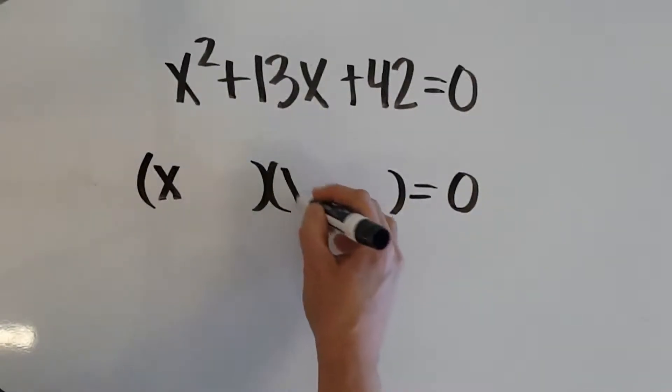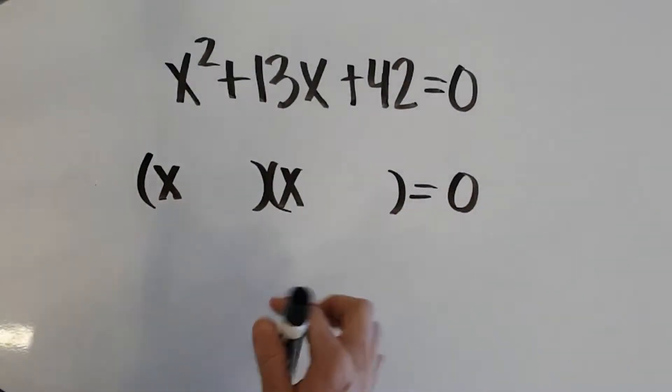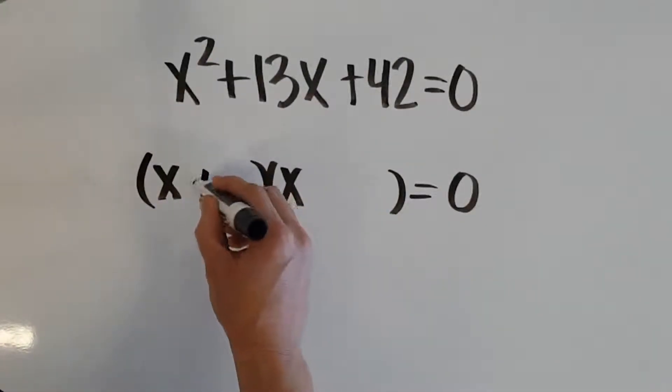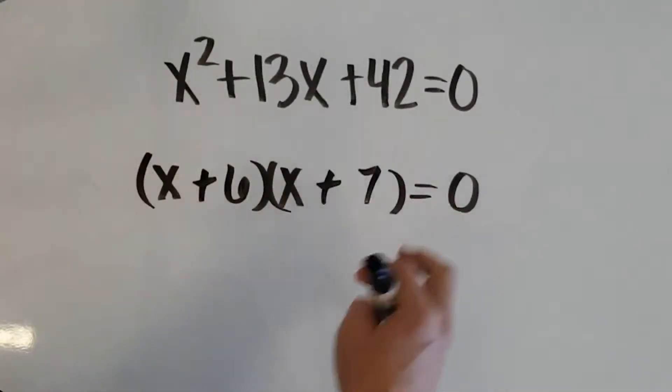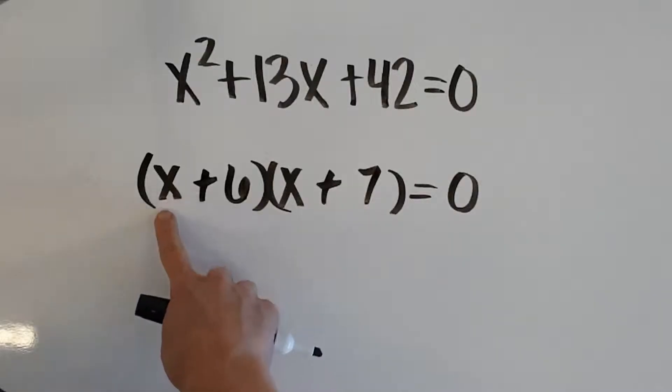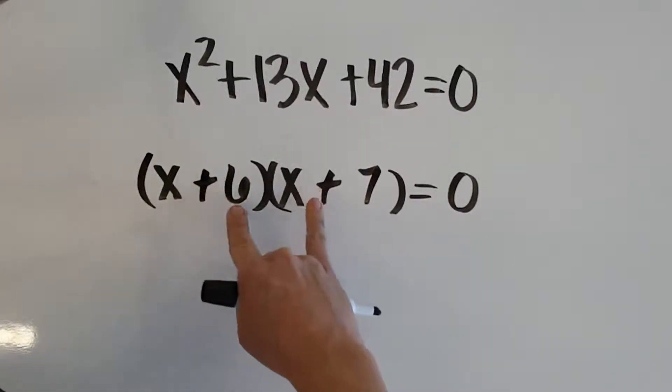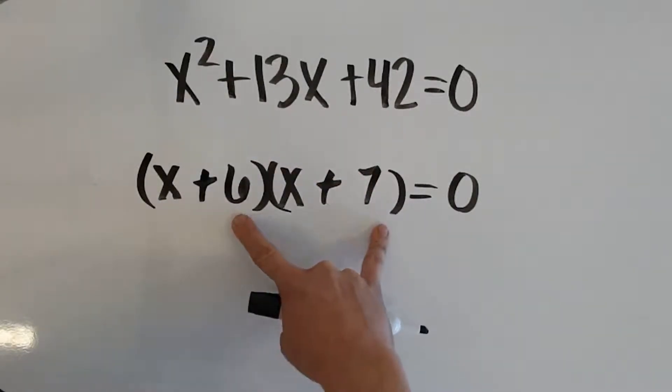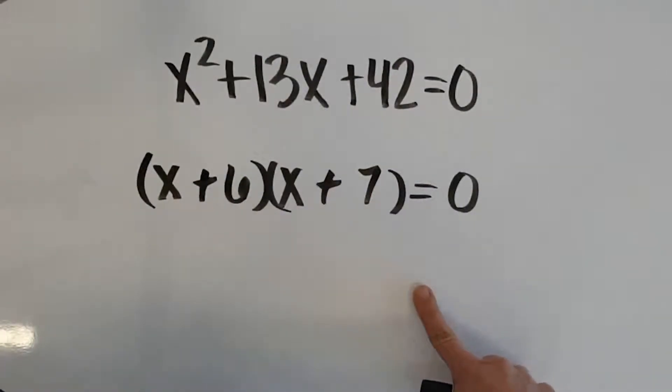And if you need a refresher about how to factor, you can always go watch those videos. But our choices here, plus 6 plus 7. So, we know x times x is x squared. x times 7 is 7x. 6 times x is 6x, which combines to be 13x. 6 times 7 is 42. So, I know I factored it correctly.